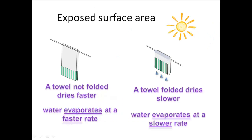Another factor affecting evaporation is exposed surface area. You see two pictures: in picture one, a towel is not folded and is hung for drying — this towel dries faster because water evaporates at a faster rate. In picture two, a towel is folded and hung — this towel dries slower because water evaporates at a slower rate. The difference is that in picture one, the surface area exposed is more, whereas in picture two, the surface area exposed is less.